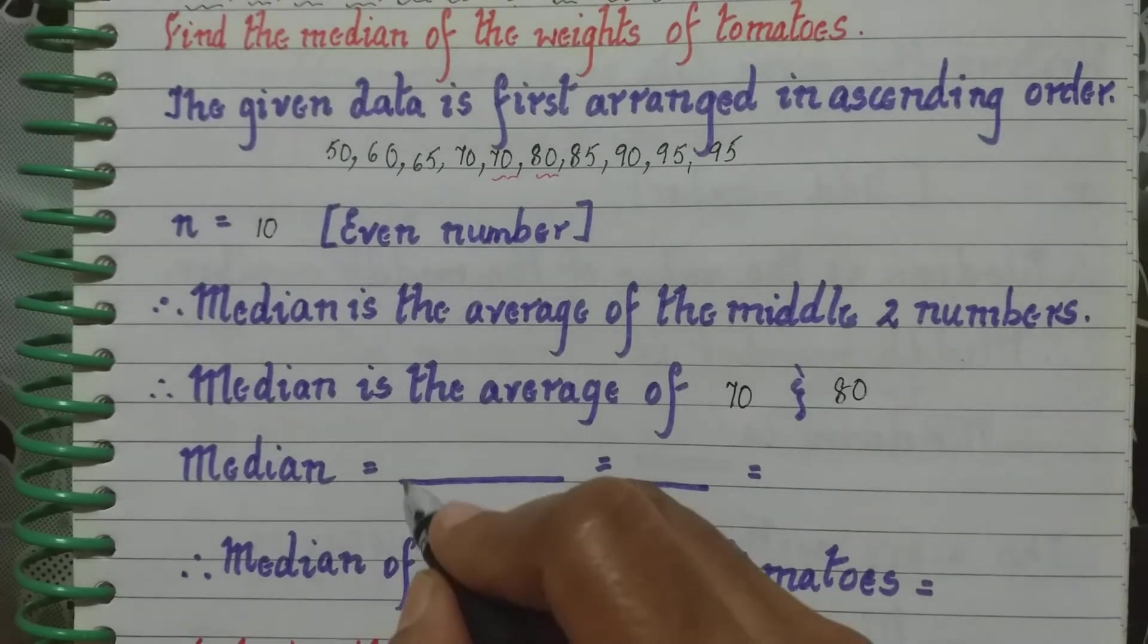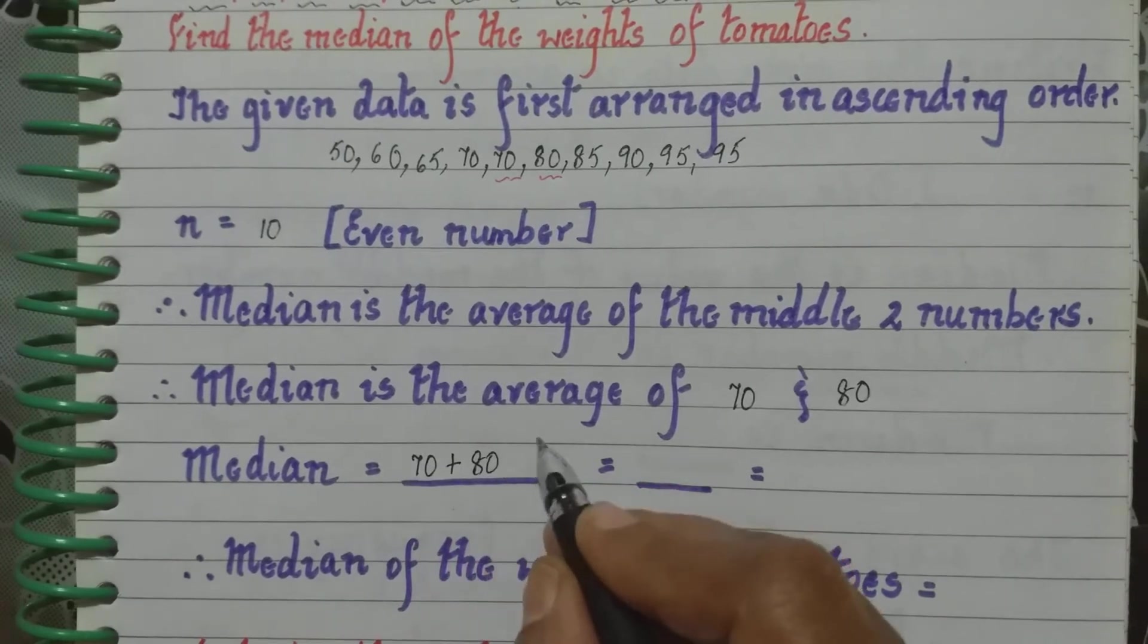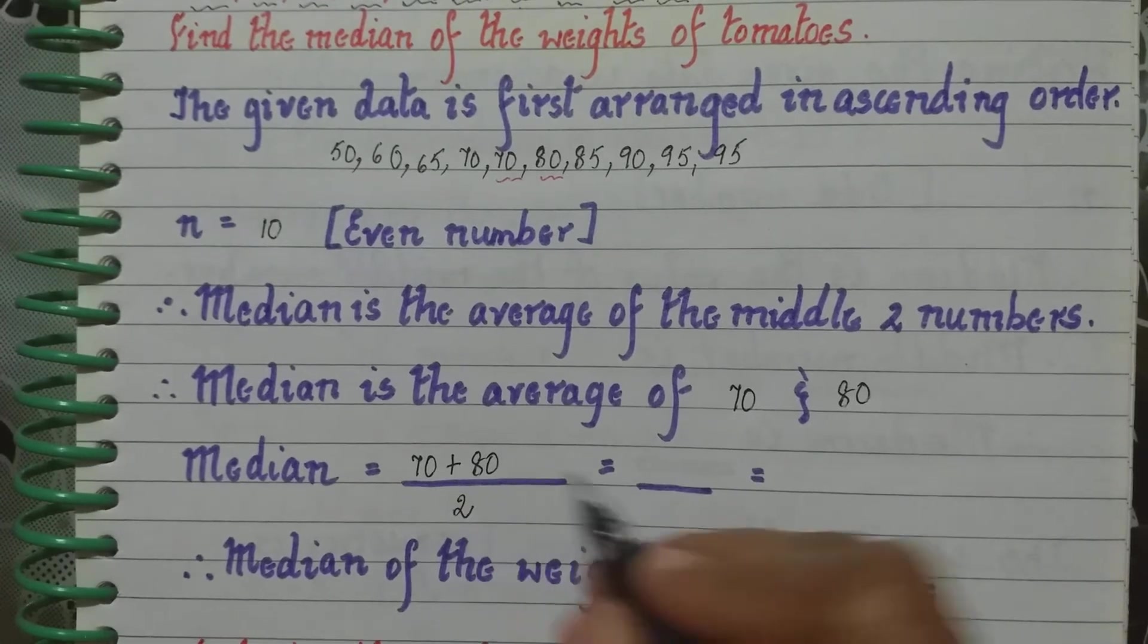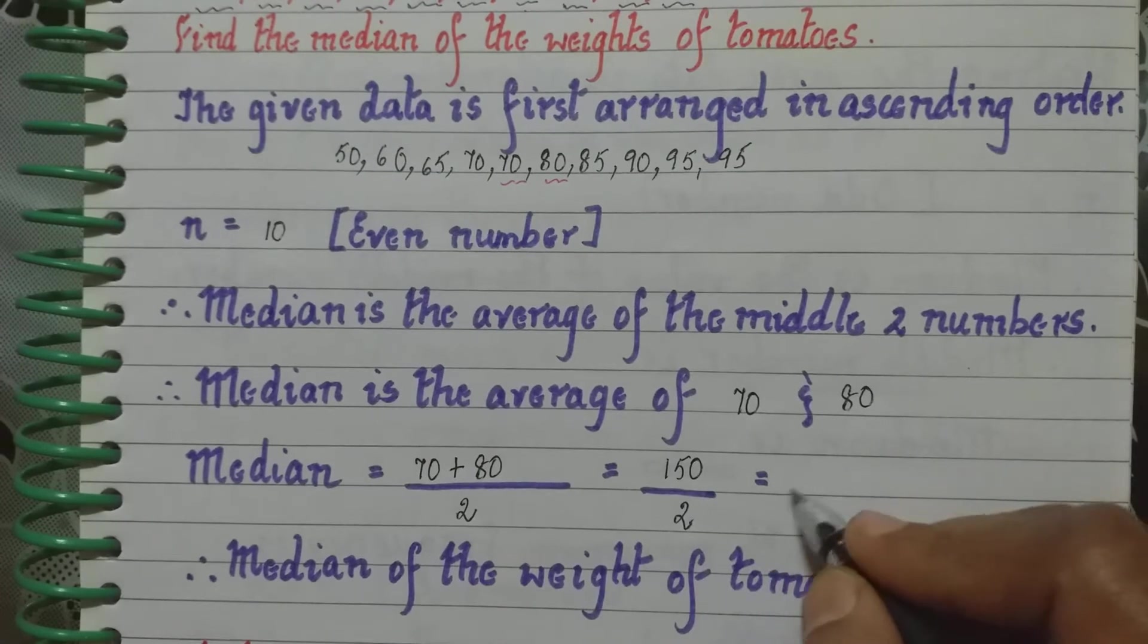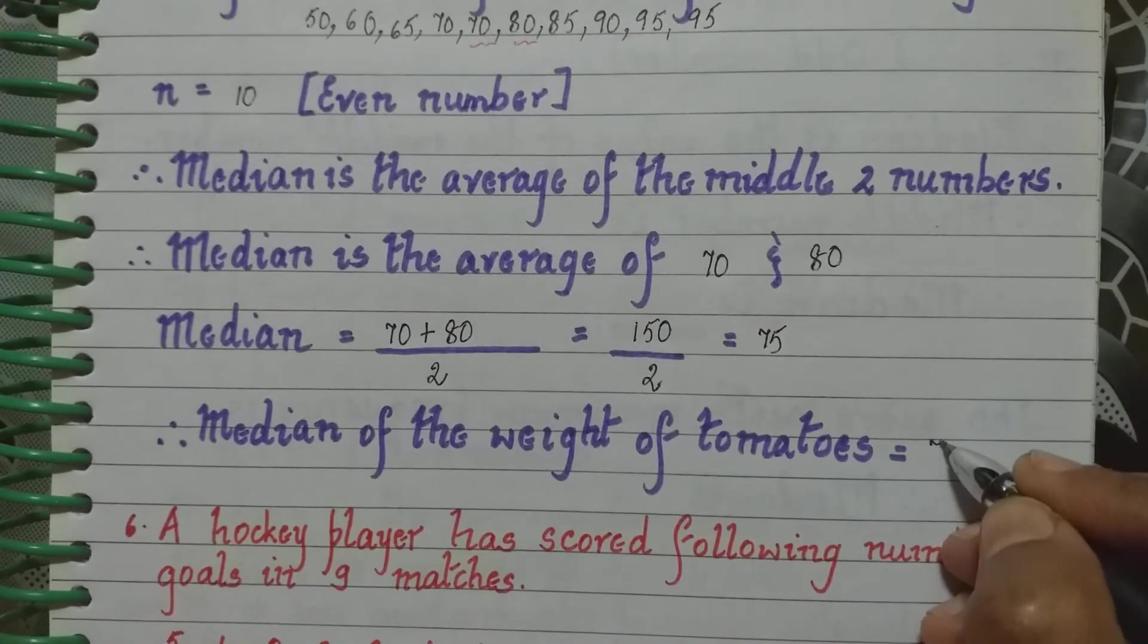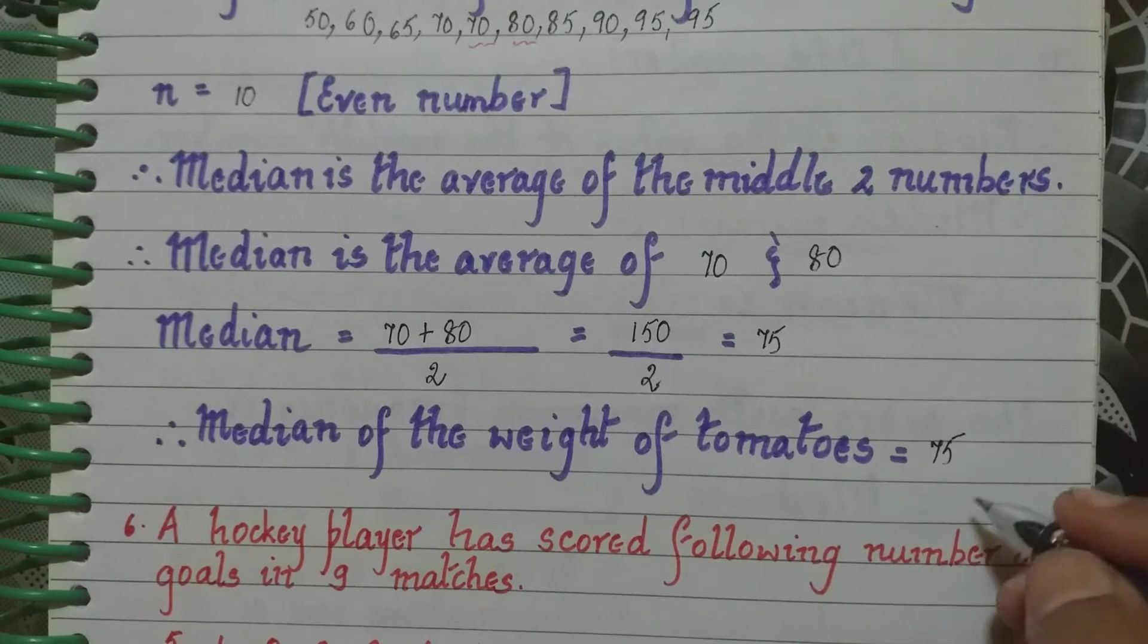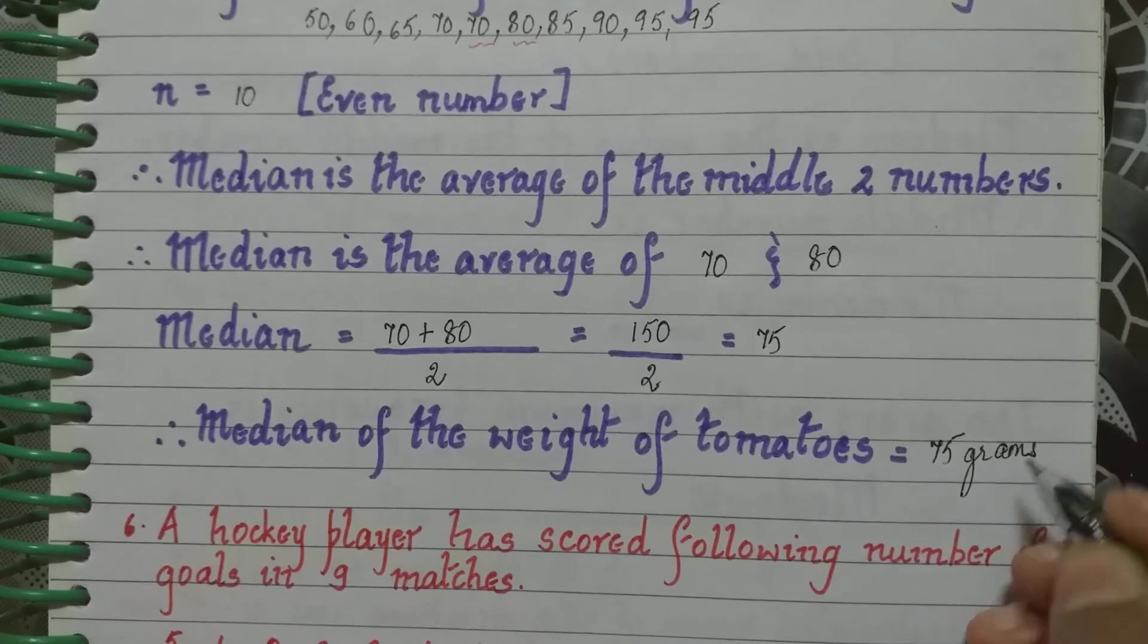Therefore, median is equal to 70 plus 80 average. So that is two numbers are taken, so we divide by 2. 70 plus 80 is 150. Divide by 2 will be 75. Therefore, median of the weight of tomatoes is equal to 75 grams.